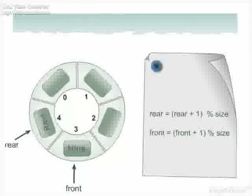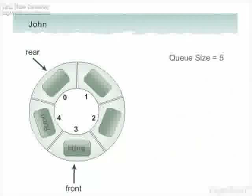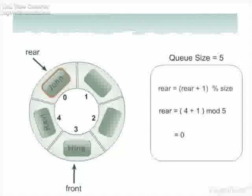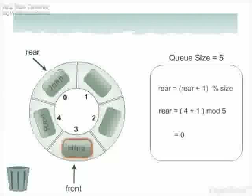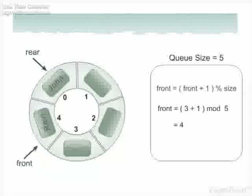The positions of front and rear are set using a formula. Suppose we want to store the name John in the queue — for that we shift rear using: rear = (4 + 1) mod 5 = 0, so we store John at the 0th location. Similarly, to delete, the name pointed to by front — which is Hina — is deleted, and front = (3 + 1) mod 5 = 4, so front is shifted to the 4th location.